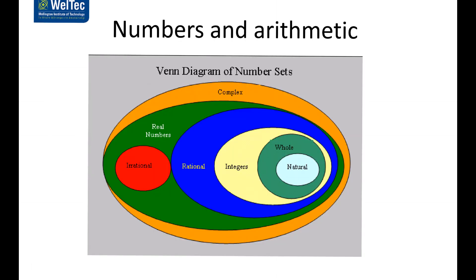It's quite useful sometimes to visualize the numbers and where they fit as a set. Natural numbers are at the middle, then whole numbers, then integers, and then the real numbers, made up of the rational and irrational numbers. Over and above that are numbers that are not real — we'll talk about these as complex numbers, which are outside the real numbers.